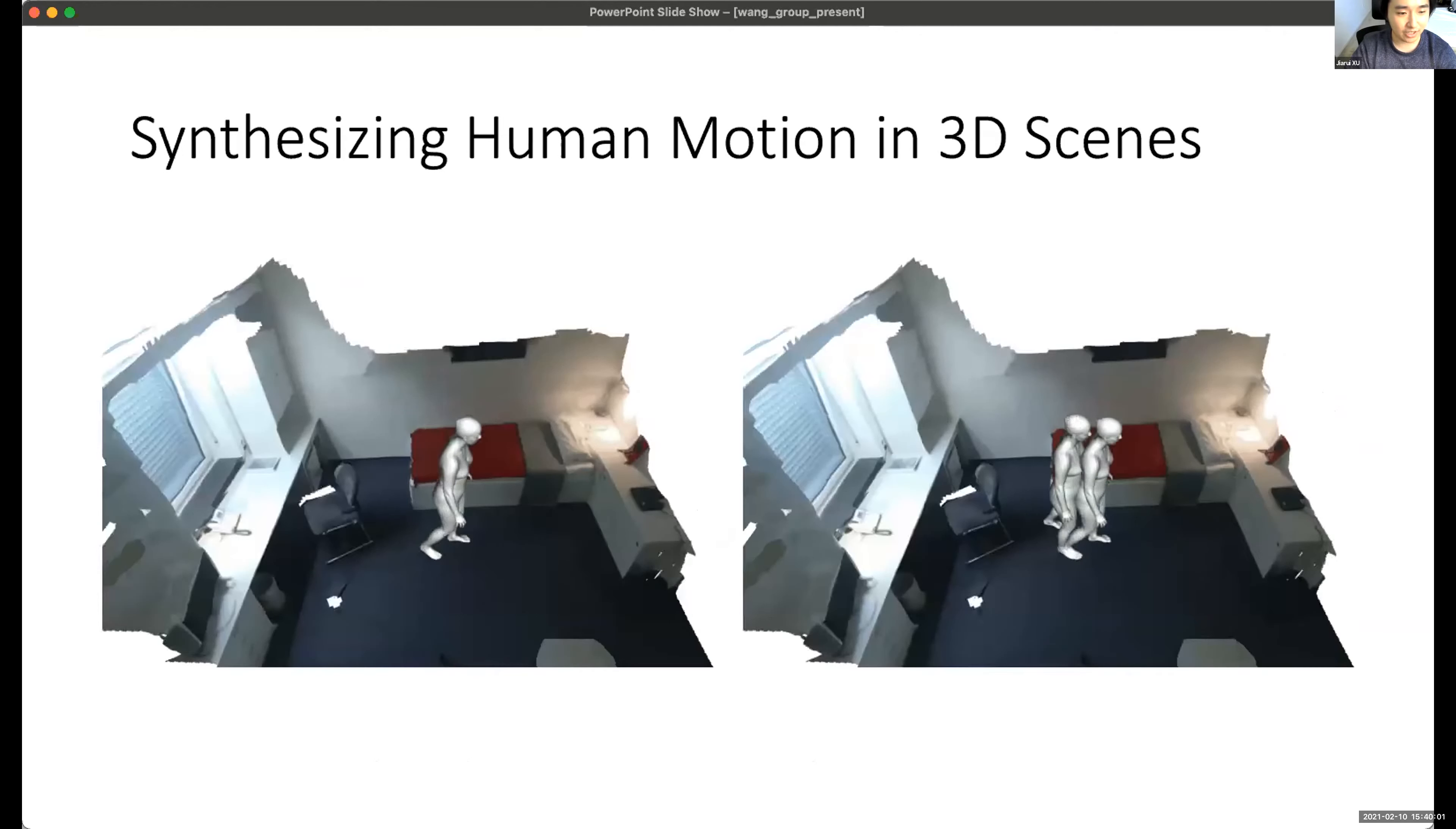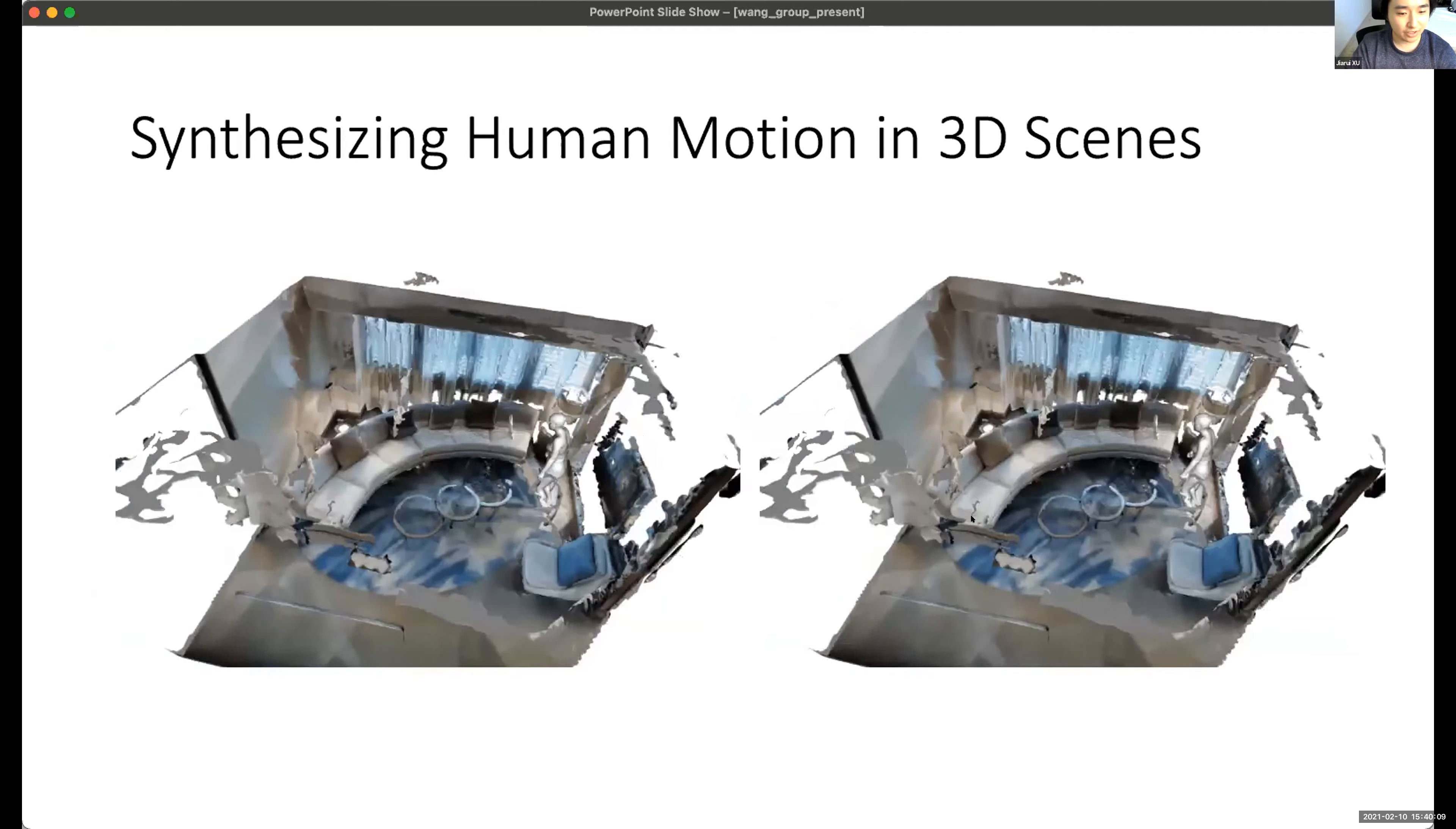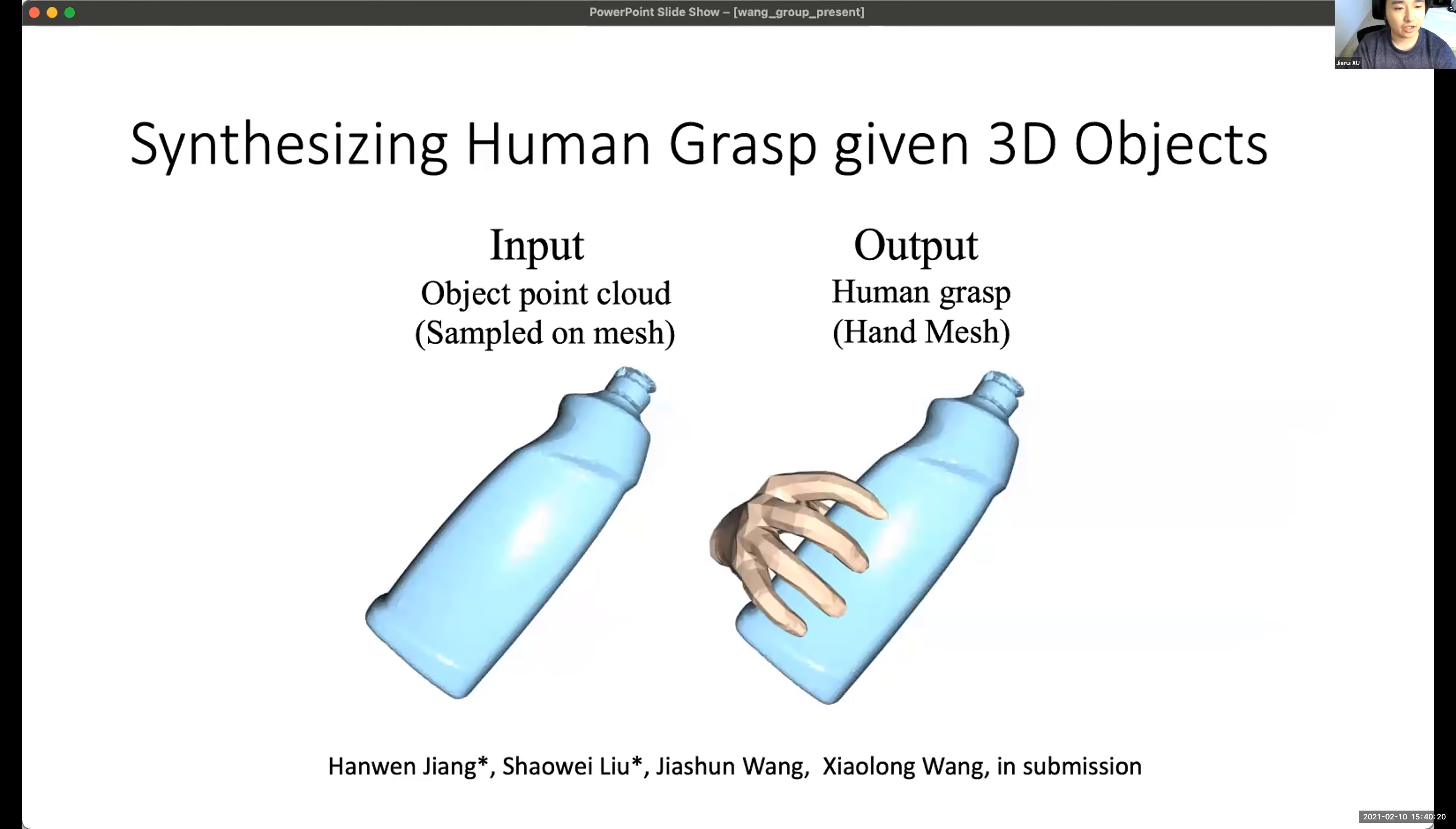And the human could start from some position and end in some position without colliding with the other objects. And here is another demo. The human body could walk through the room and sit on the chair. And here is another demo sitting on the couch. You can see that the human moves very smoothly from the start to the end point.